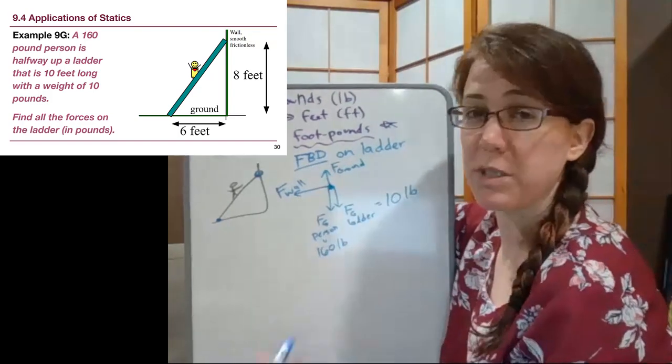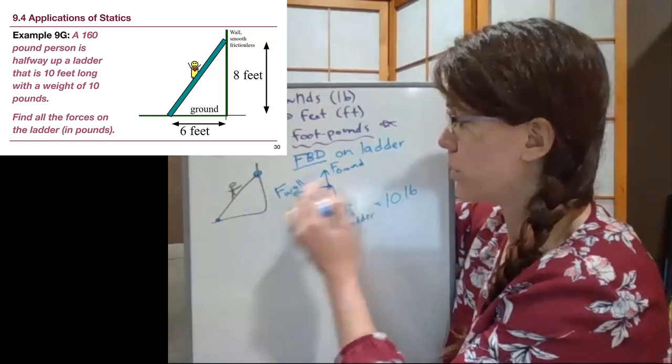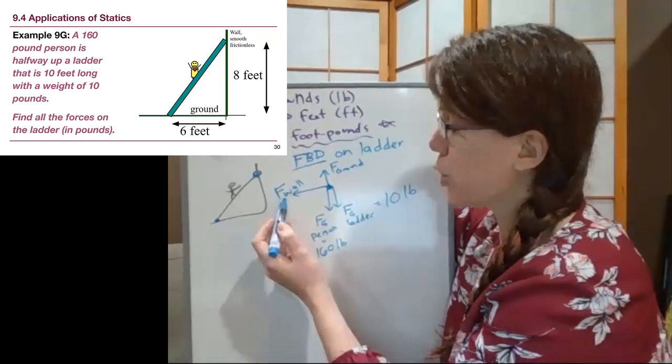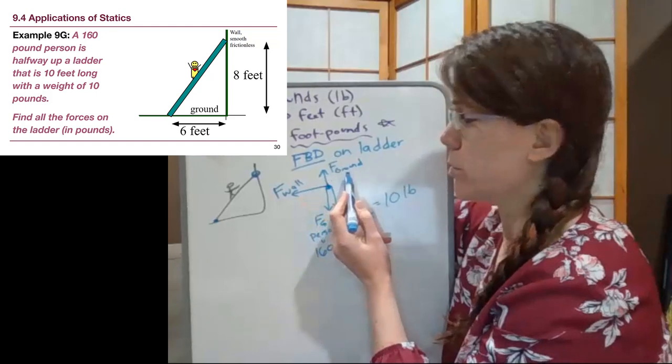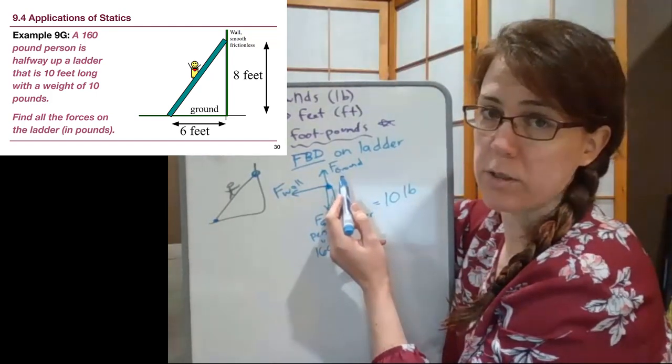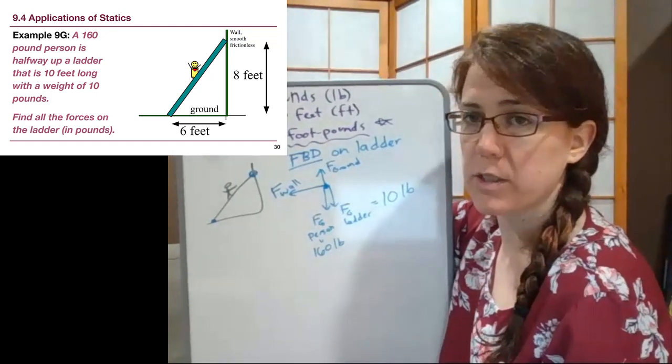To make sure we don't get confused with two things that are both labeled Fn, the normal force from the wall I'm going to call force of the wall, and the normal force on the ground I'm going to call force of the ground. Now we're told that the wall is frictionless because even if there is some friction, it's not going to be a big force acting here.